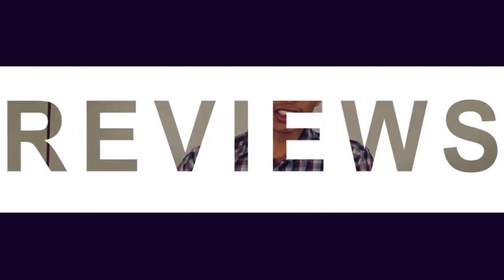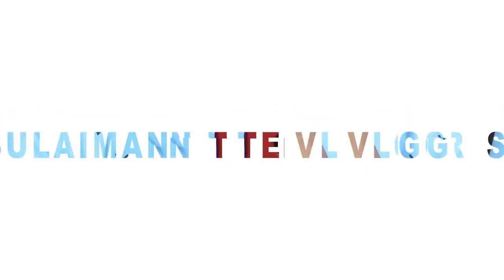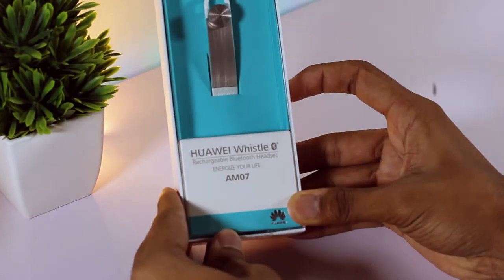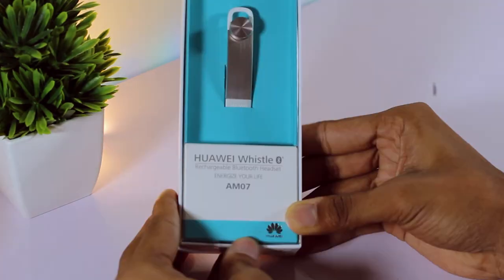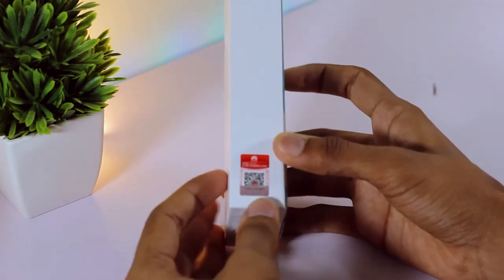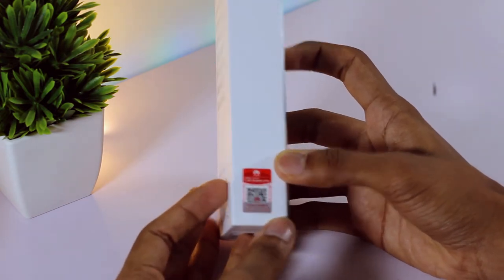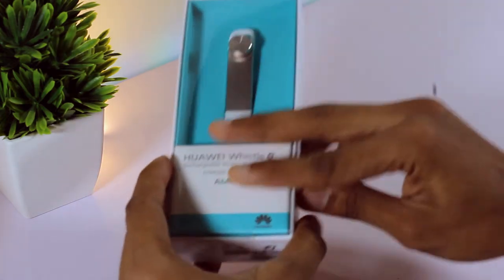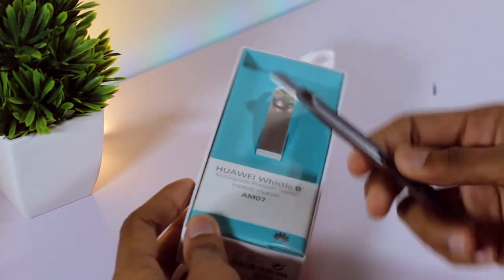This is the box. Huawei Whistle rechargeable Bluetooth headset, and the headset model number is AM07. The color version is golden. On the side of the box you can see a scratch code and QR code. You need to scratch that for scanning. The package gives the premium quality, so let's unbox this thing.